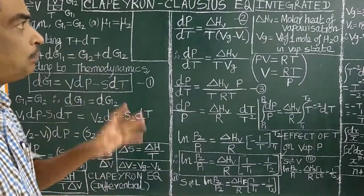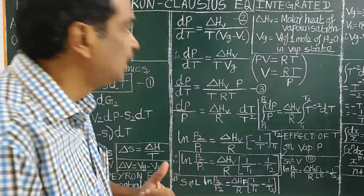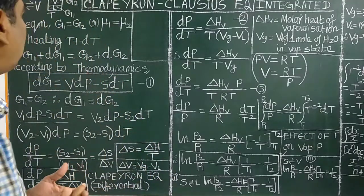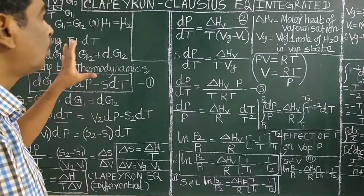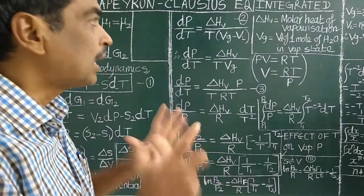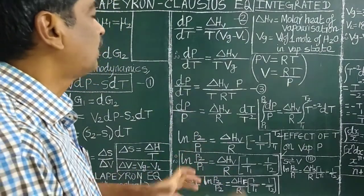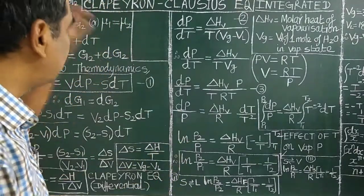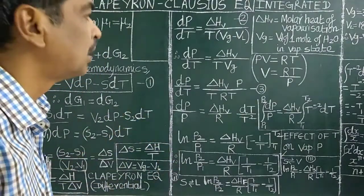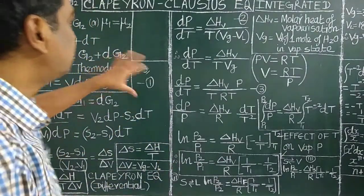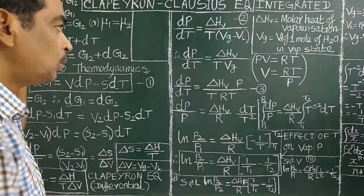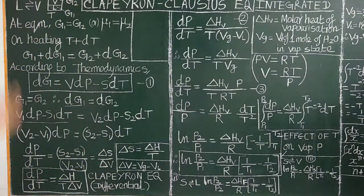This equation is important for competitive examinations such as IIT JEE, CSIR, and GATE. The equation is very important to solve any type of problem in your competitive examination. So, we are ready to derive the Clausius-Clapeyron Equation.